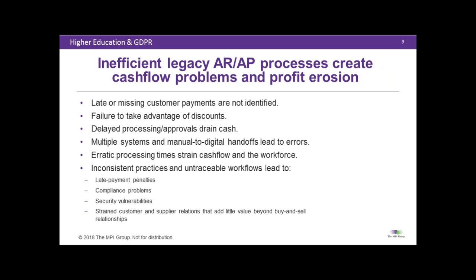Cash is lost in a bunch of places: delayed processing approvals, failure to take advantage of discounts, late or missing customer payments, erratic processing times, multiple systems, and manual-to-digital handoffs — all kinds of time and waste. Everybody on this call who has done lean in any other format would not put up with this in a production facility, warehouse, or supply chain. Yet it's incredibly common within financial practices. We see people having late payment penalties even though they've got the cash sitting there, compliance problems, security vulnerabilities, all driving customers and vendor partners crazy.